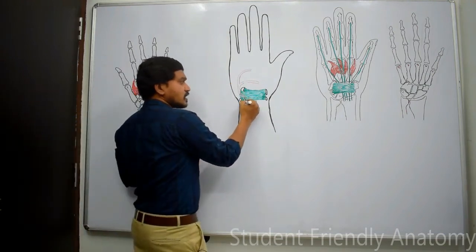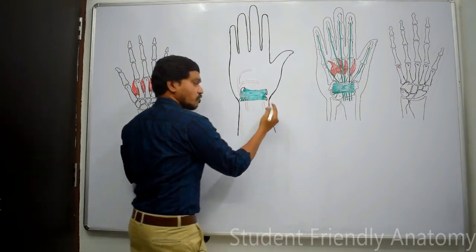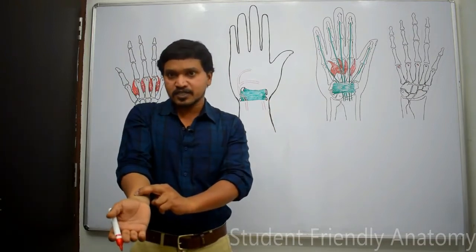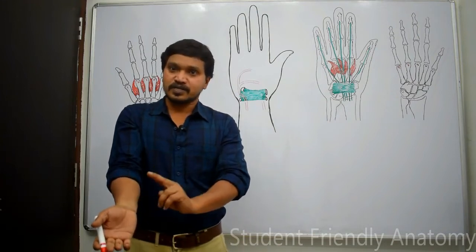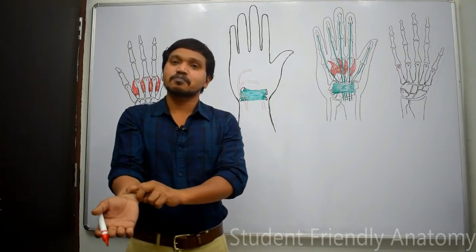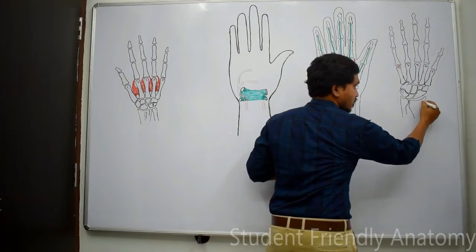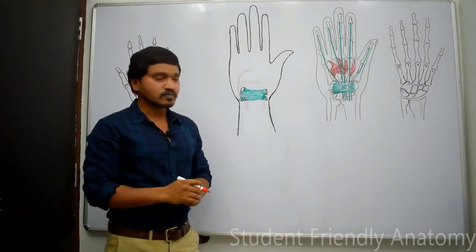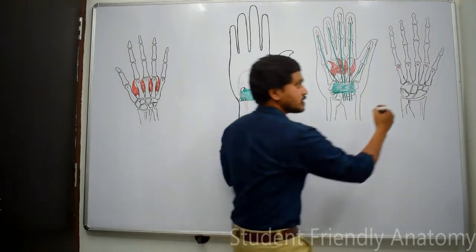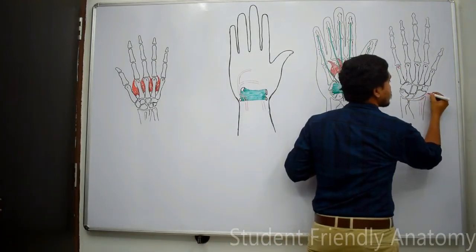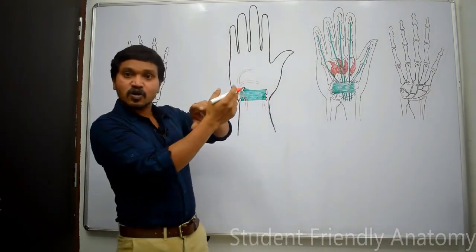Now we look at the radial artery. At the distal part of the forearm, you can feel its pulsations anterior to the lower end of the radius and lateral to the tendon of flexor carpi radialis. The radial artery does not pass superficial to the flexor retinaculum; instead, it winds around the lateral part of the wrist and enters the anatomical snuff box.